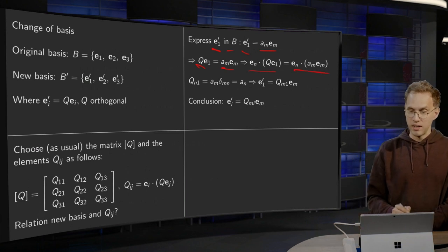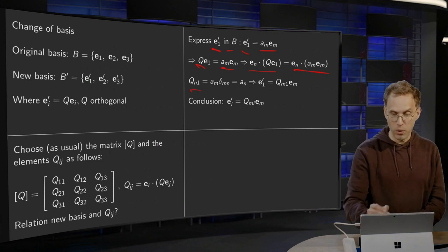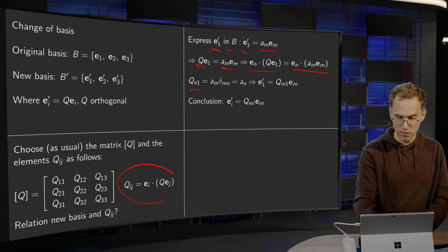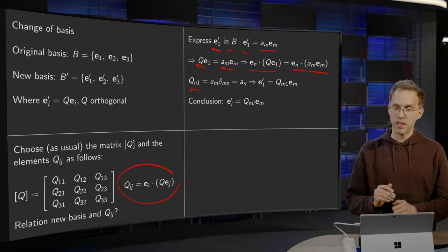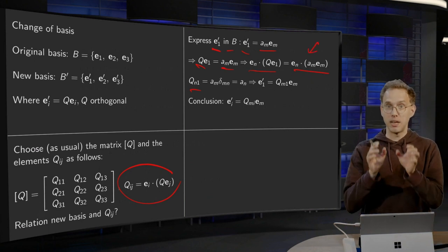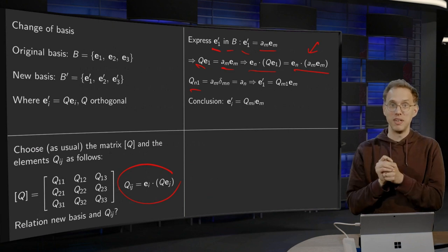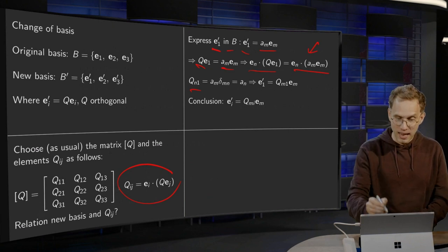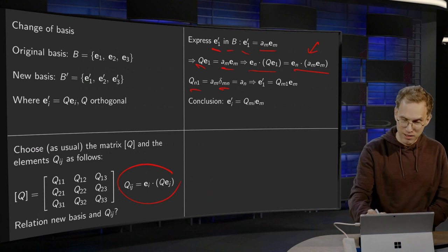Now, the left-hand side gives me, by definition, the QN1. So using this formula over here, with I=N and J=1. And the right-hand side here, this inner product, gives me AM*(EN·EM). So it gives me a delta_MN over here. So AM*delta_MN gives you AN.